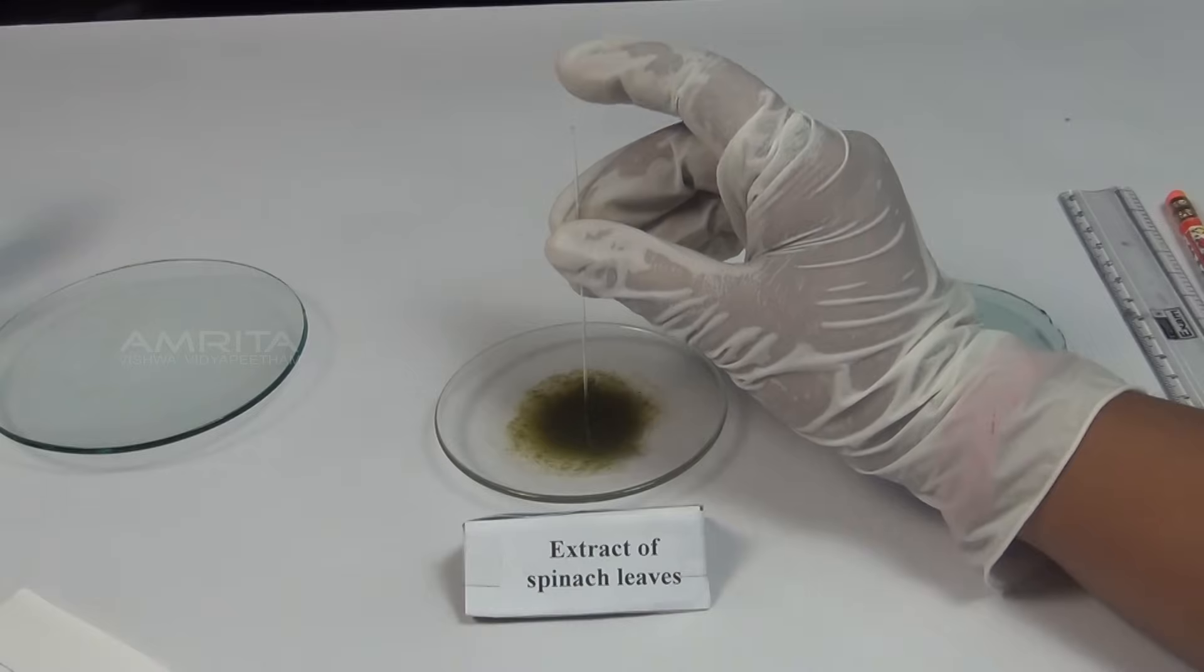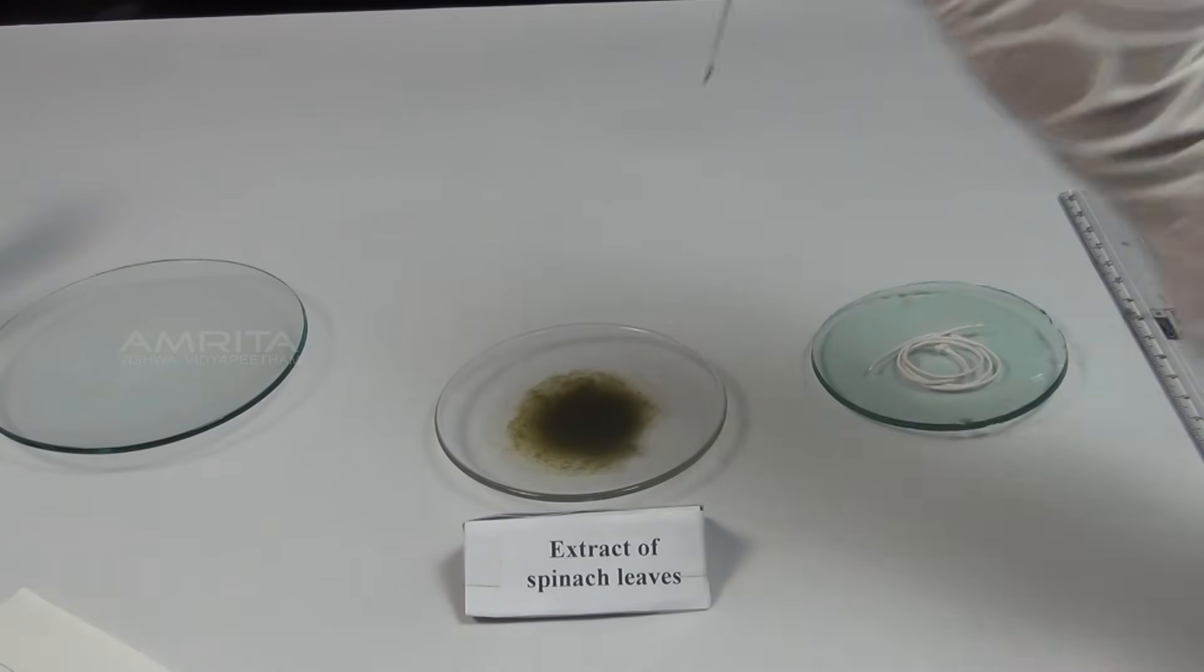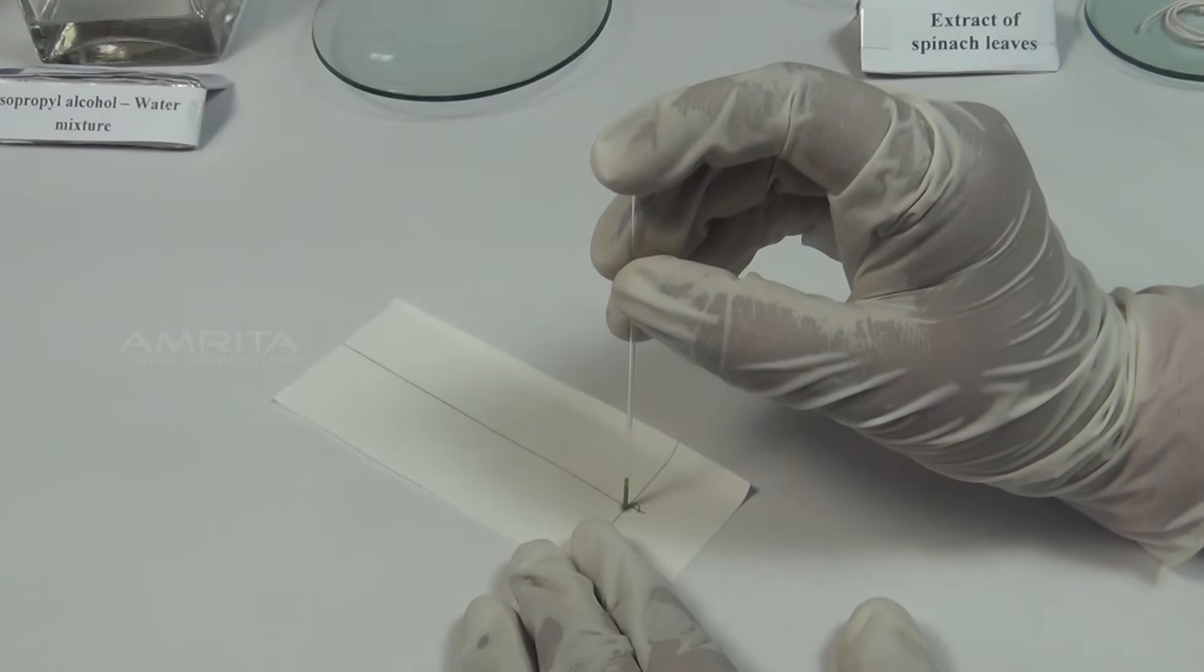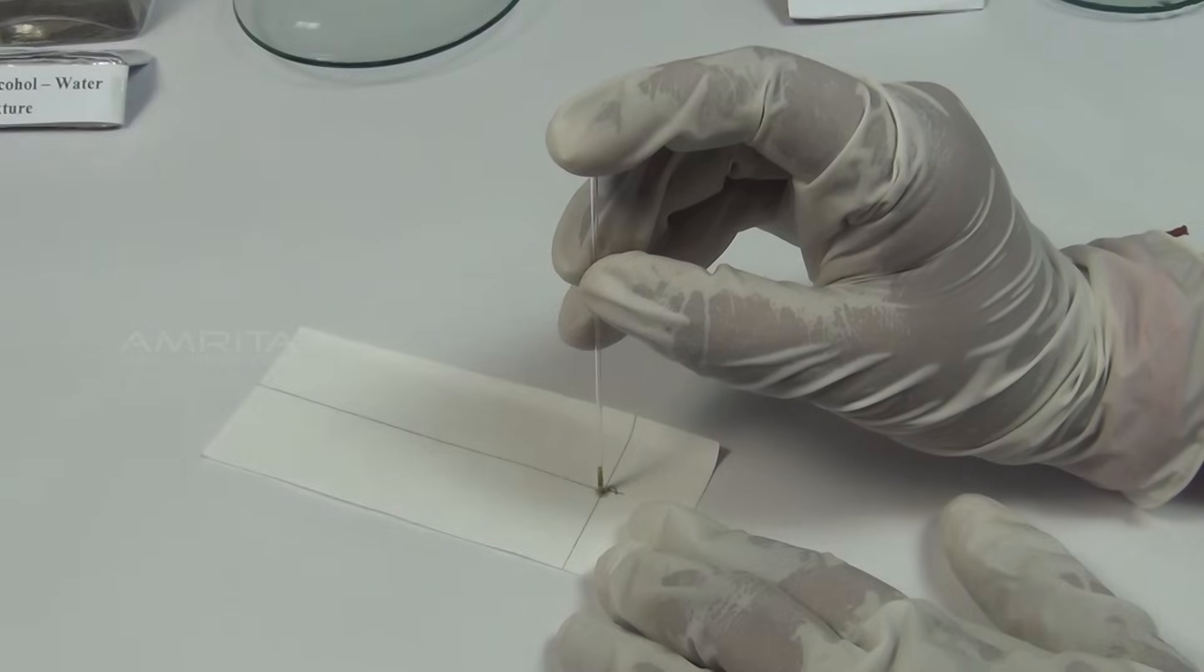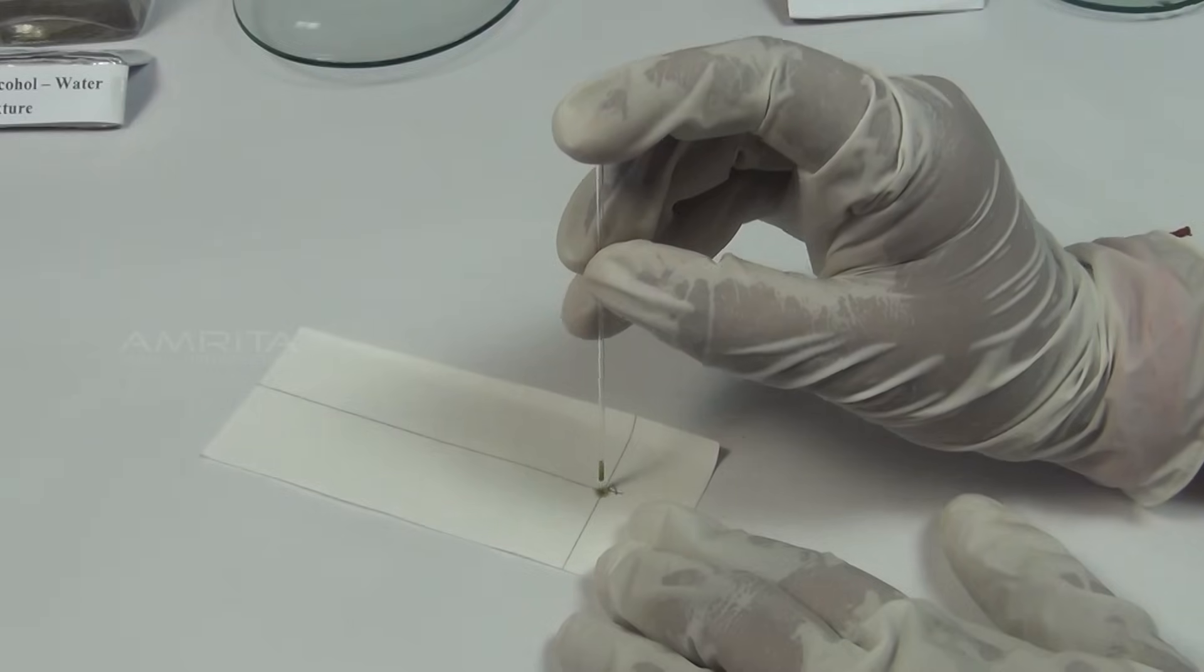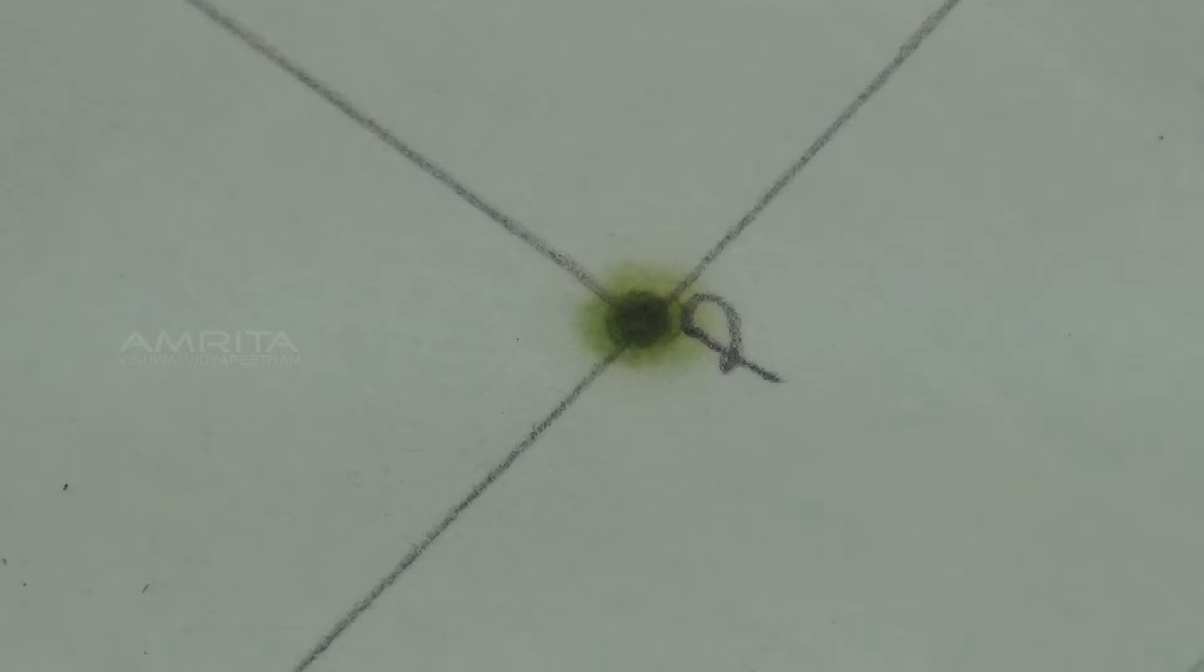Take the extract of spinach leaves using a capillary tube. Put a drop of the leaf extract at point P. Allow it to dry in open air. Put another drop on the same spot and dry again so that the spot is rich with the mixture.